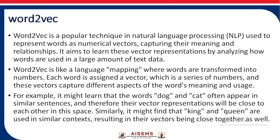Now, Word2Vec. Word2Vec is a popular technique in NLP used to represent words as numerical vectors, capturing their meaning and relationships. It learns these vector representations by analyzing how words are used in a large amount of text data. Word2Vec is like a language mapping where words are transformed into numbers. Each word is assigned a vector — a series of numbers — that captures different aspects of the word's meaning and usage. For example, it might learn that 'dog' and 'cat' often appear in similar sentences, so their vector representations will be close to each other in the space.